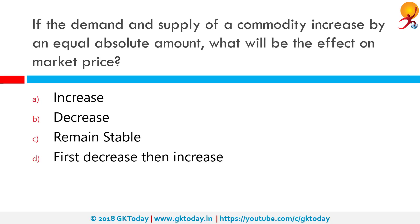If the demand and supply of a commodity increases by an equal absolute amount, what will be the effect on the market price? Since the increase in demand was equivalent to the increase in supply, the market price for the commodity will remain stable.